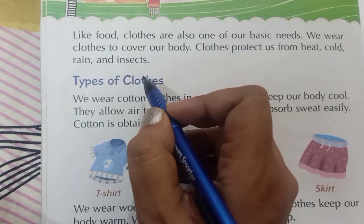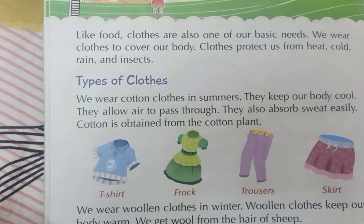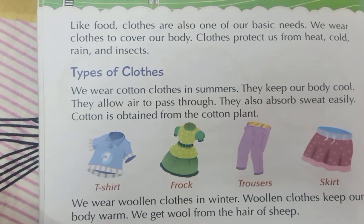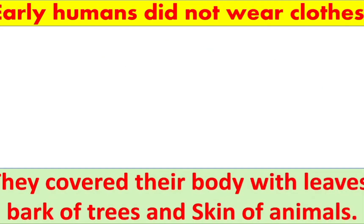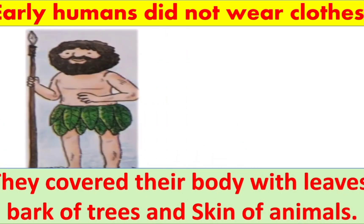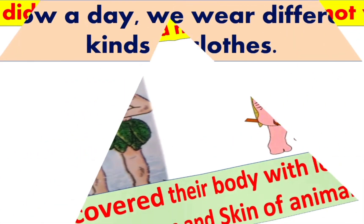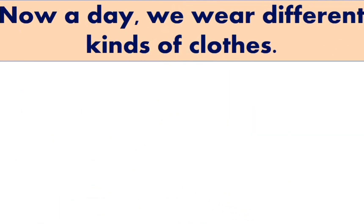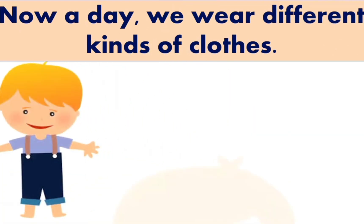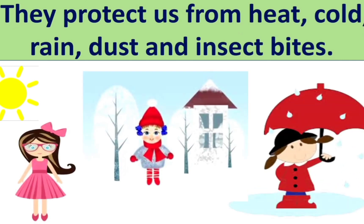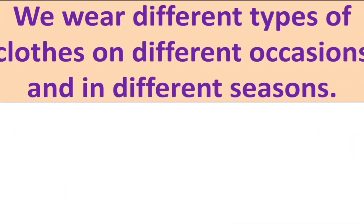We wear clothes to cover our body. Clothes protect us from heat, cold, rain, and insects. You know, students, early humans didn't wear clothes — they covered their body with leaves, bark of trees, and skin of animals. But now we wear different kinds of clothes that protect us from heat, cold, rain, dust, and insect bites.